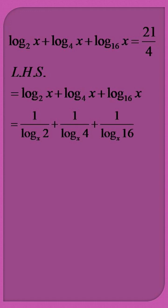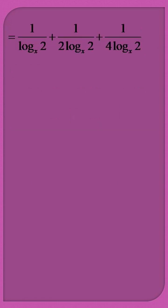Further, we take the factorization of the different logarithmic terms and express them in the form of log 2. Now we take common 1 by log 2 to the base x, and the left-hand side simplifies to be equal to 7 by 4 into 1 by log 2 to the base x.